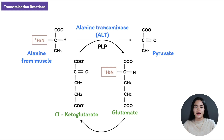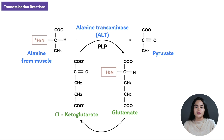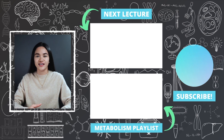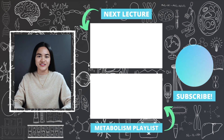That is pyruvate pathways and metabolism. In this lecture, we learned what happens to pyruvate under anaerobic or low oxygen conditions and why fermentation occurs — harvesting energy without using oxygen. We also broke down what happens to pyruvate under aerobic conditions and how pyruvate is involved in gluconeogenesis and the glucose-alanine cycle. Remember: subtract complexity and slow down. To study the next lecture, simply click the next video or view the entire metabolism playlist.